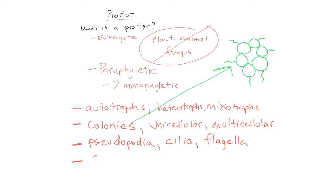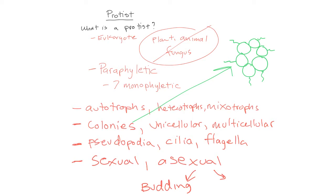We had one other way to categorize them: reproduction. They can be sexual or asexual, and there were two types of asexual reproduction — budding and mitosis. So if one of them is smaller, it's budding off; the little one is going to grow. With mitosis, they equally share the cytoplasm and cellular organelles. You guys know what protists are.